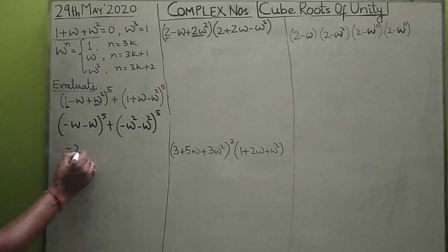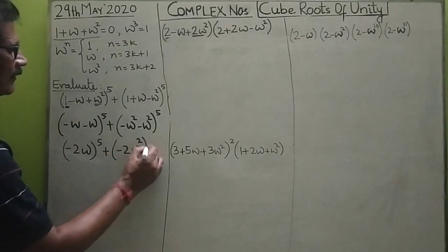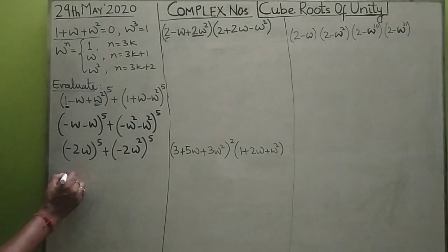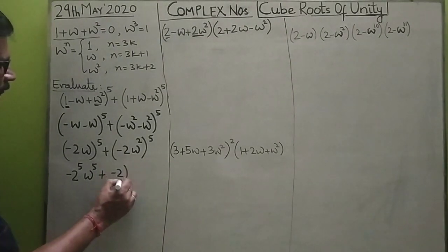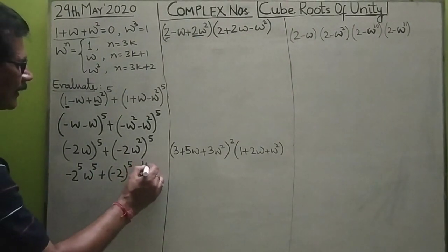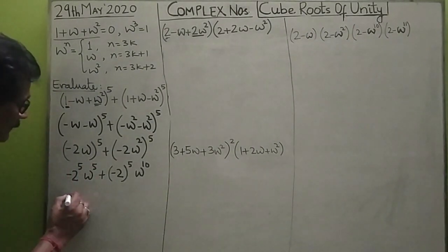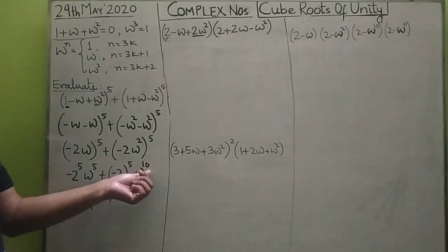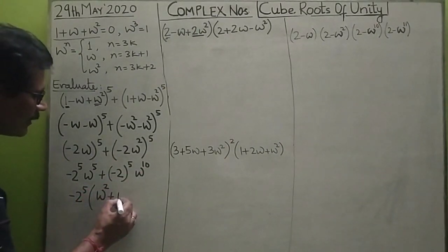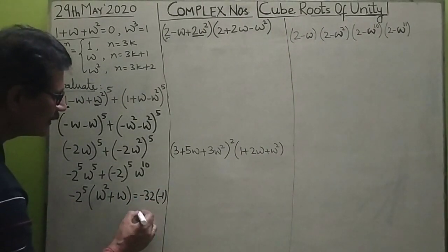This becomes (minus 2 omega) to the power 5 plus (minus 2 omega squared) to the power 5, which expands to minus 2 to the power 5 times omega to the power 5, plus minus 2 to the power 5 times omega to the power 10. Since the indices exceed 3: 5 divided by 3 gives remainder 2 so omega to the 5 is omega squared, and 10 divided by 3 gives remainder 1 so omega to the 10 is omega. Taking minus 32 common, we get minus 32(omega squared plus omega), which equals minus 32 times minus 1, giving plus 32.